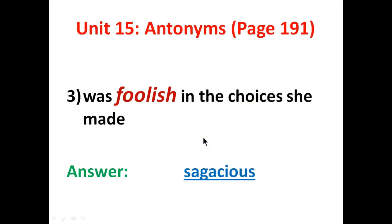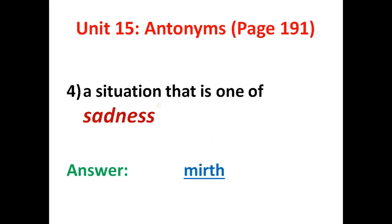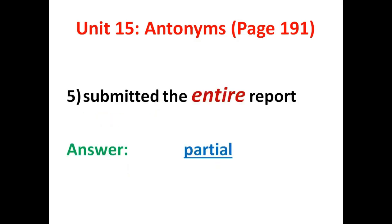Number three: was foolish in the choices she made. For the adjective 'foolish,' the antonym is 'sagacious' — s-a-g-a-c-i-o-u-s. Number four: a situation that is one of sadness. For 'sadness,' the antonym will be 'mirth' — m-i-r-t-h.